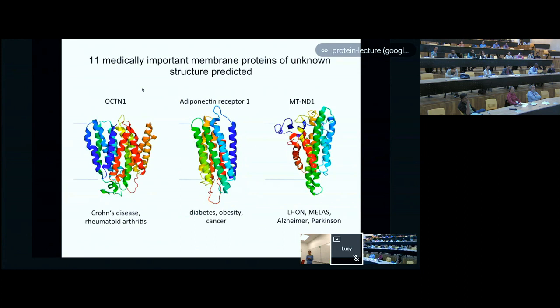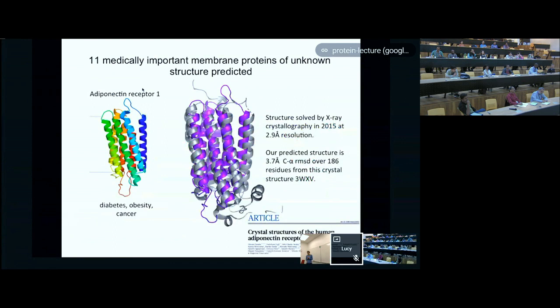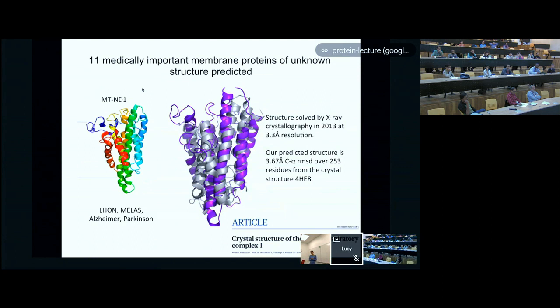As I mentioned yesterday, we were able to make these predictions for a number of medically important membrane proteins of unknown structure, and published them back in 2012. Since then, some of these proteins have been crystallized—this is nice because we need to check, though it's also nerve-wracking because we might be wrong. At least in the case of this adiponectin receptor, our prediction was pretty close to the solved structure. This solved structure just came out in 2015; we were 3.7 ångströms Cα RMSD over 186 residues. The predictions are not nearly as good over the loops—the intracellular and extracellular loops are much harder to get right—but the helices are arranged in a way that does match the conformation in the crystal structure. We also made a prediction for mitochondrial complex I subunit 1, and one of our highest-ranked predictions is 3.7 ångströms Cα RMSD from that solved structure.